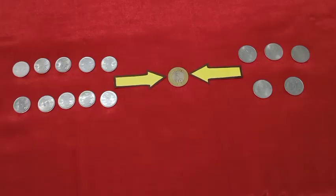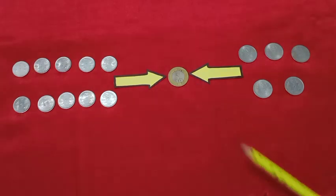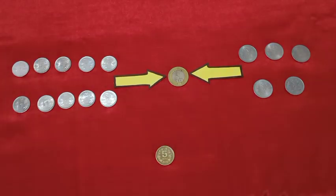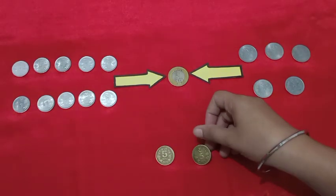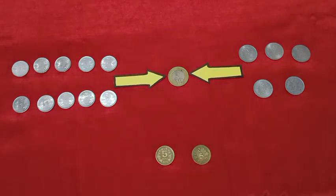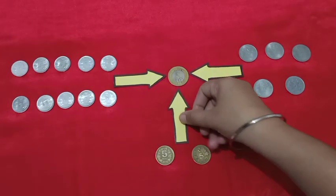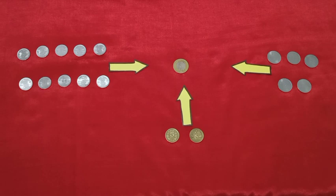Now, let us see how many 5 rupee coins. It's 5 and 5 plus 5, 10. So students, the value of 2 five-rupee coins is equal to 1 ten-rupee coin.